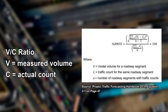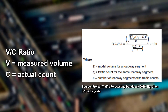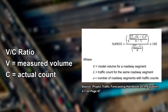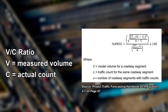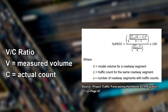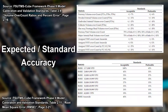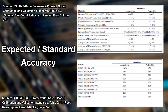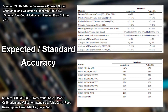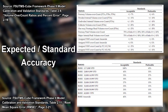Travel demand models are evaluated for accuracy using base year conditions and comparing the model's output to actual base year data. The two primary measures for quantifying difference between model volumes and real-world traffic counts are the volume-over-count ratio and the root mean square error. The tables shown on screen show acceptable ranges of accuracy using the volume-over-count ratio and root mean square error evaluation methods.